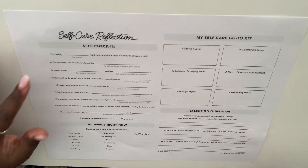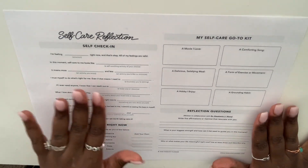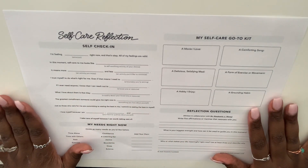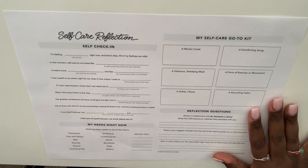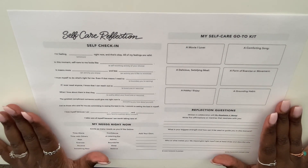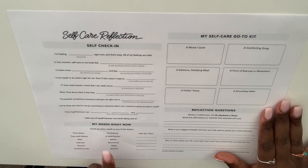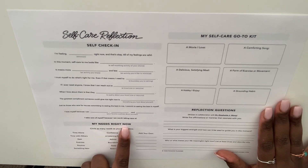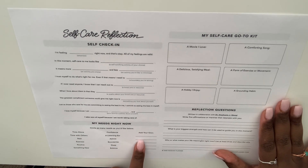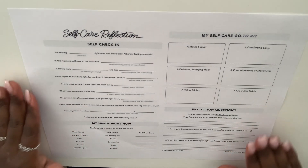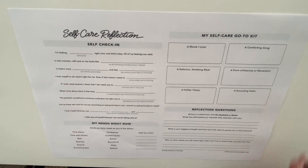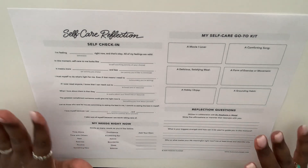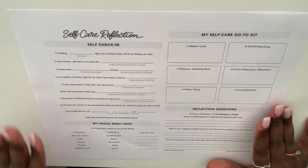That is really deep. I think this is really good as far as taking care of yourself, whether it's weekly, monthly, or however you want to use it — I'm super excited about using it. At the bottom we have 'my needs right now' and you can circle as many as you like and also add your own. This is another reason why I love Passion Planner — it's customizable in terms of what goals you are trying to reach and what you're trying to do in your life.